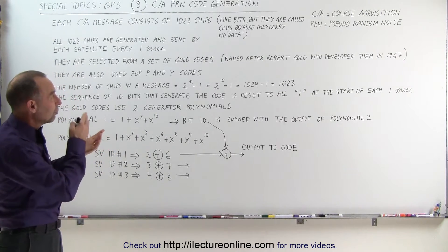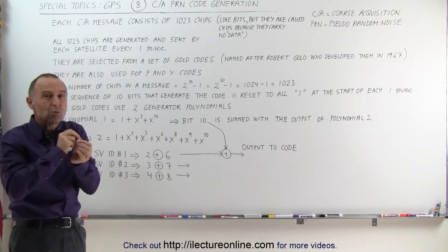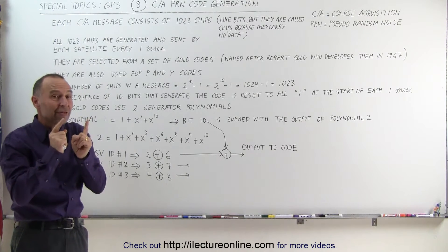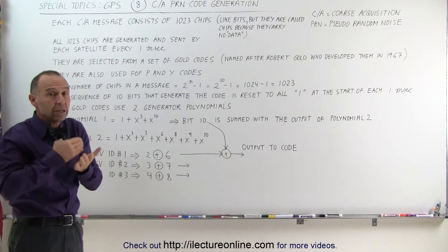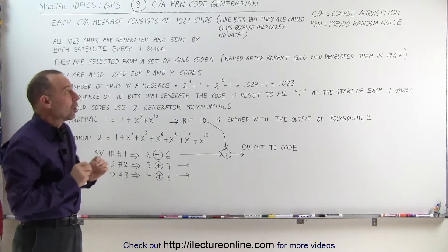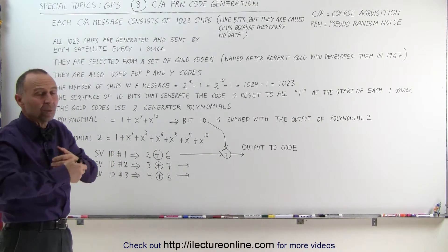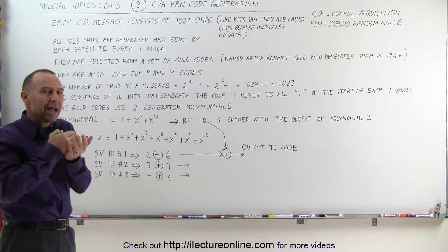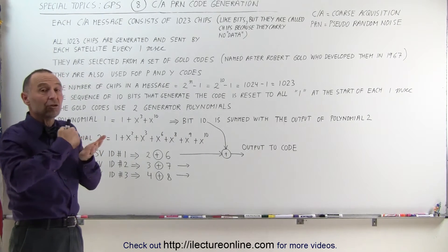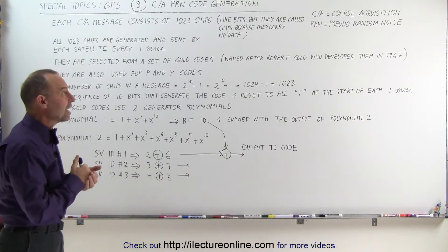The reason why they call them chips is because they actually carry no real data. They do carry the information of which satellite it belongs to because each satellite has its own unique code, but it doesn't actually carry significant information such as what the time is or anything like that. That time is encoded with other messages that are superimposed on the CA code message.